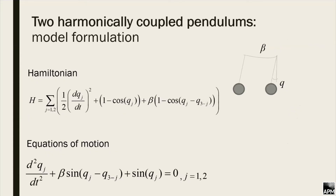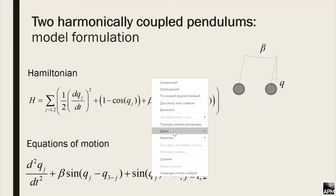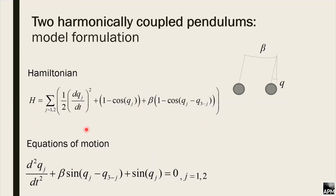Why is nonlinearity so important? The main problem appears when the quasi-linear approach cannot be applied — specifically when the amplitudes are high. The most simple system to consider is the system of two coupled pendula. The Hamiltonian of the system looks as follows, and there are the equations of motion.